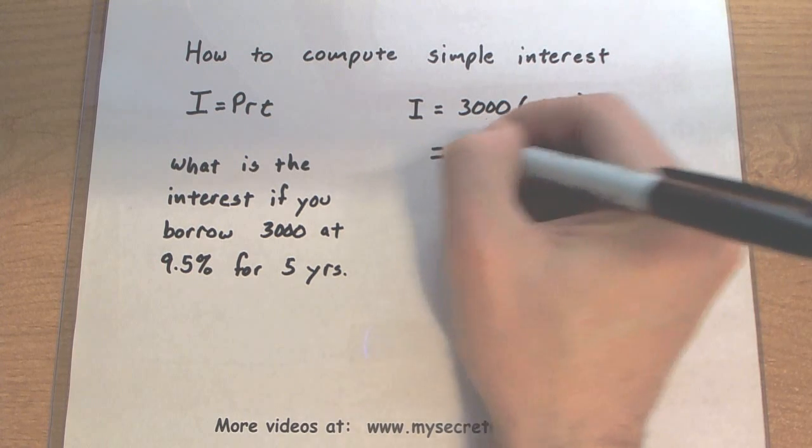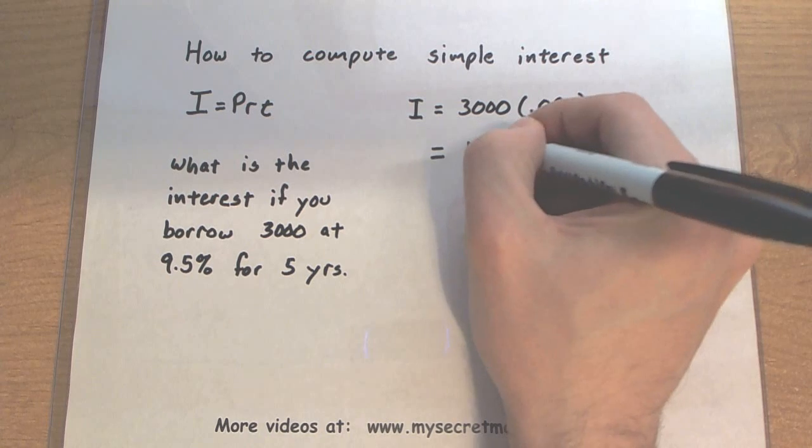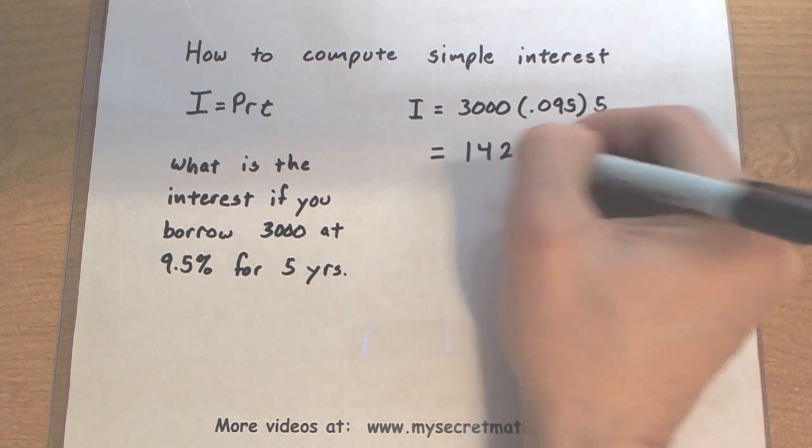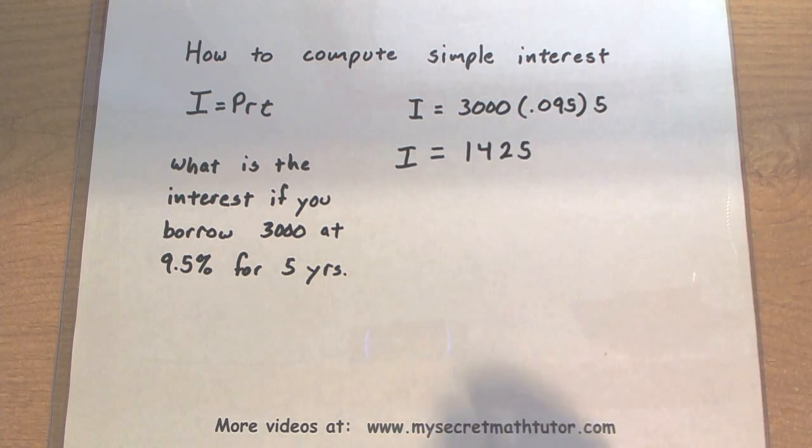When you multiply all of that together, you get $1,425. So this amount right here is just the interest.